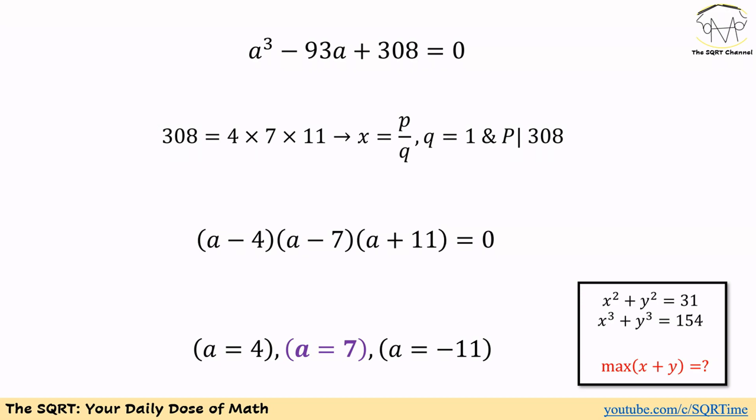And you can also verify that by using negative 11 here. So at the end we have a minus 4 times a minus 7 times a plus 11 is going to be 0. So the roots that we have are going to be 4, 7, and negative 11.